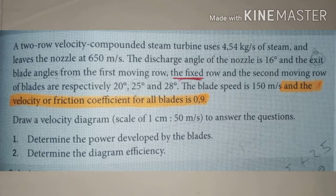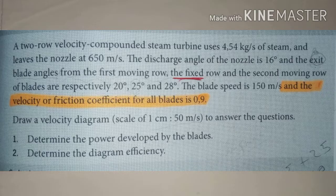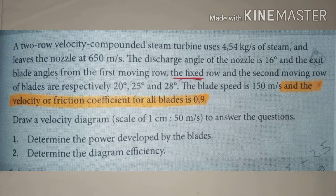The exercise is taken from a test book and reads as follows: A two-row velocity compounded steam turbine uses 4.54 kg per second of steam and leaves the nozzle at 650 meters per second. The discharge angle of the nozzle is 16 degrees, and the exit blade angles from the first moving row, the fixed row, and the second moving row of blades are respectively 20, 25, and 28 degrees. The blade speed is 150 meters per second and the velocity friction coefficient for all blades is 0.9. Draw a velocity diagram at a scale of one centimeter to 50 meters per second to answer the questions.